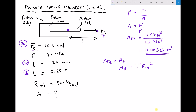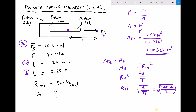The first step to getting the radius of the piston head on its own is to divide each side by pi, giving us rh squared equals Ah divided by pi. The last step to get rh on its own is to square root each side, so rh equals the square root of (0.00322 divided by pi). We can calculate the radius of our piston head — our radius comes out in meters because our area is in meters squared — and we get an answer of 0.032 meters.